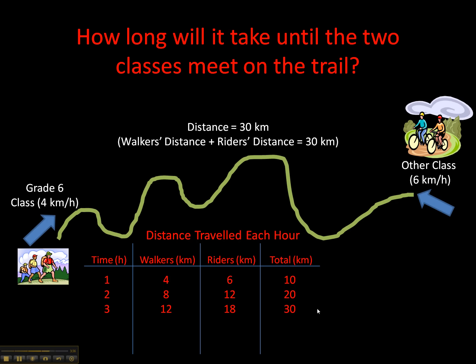If we wanted to continue the pattern, we discover that they meet in their third hour. In the fourth hour they would overshoot, so they'd pass each other — assuming they want to reach the end of the trail, not just meet and turn around. We don't need to do the fourth step, but if you did, good job. They meet up in their third hour.